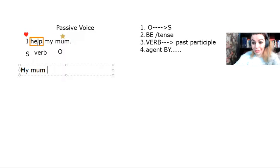The second thing is to put the verb to be in the tense of the verb. So, in this case, we have the verb help with the simple present. Now, the verb be in the simple present is is, am, is, are. So in this case my mom is.